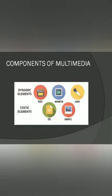Components are classified into two types: dynamic elements and static elements. Dynamic means there are changes; static means there are no changes. In newspapers there are no changes — that is static. In TVs there are changes — that is dynamic.